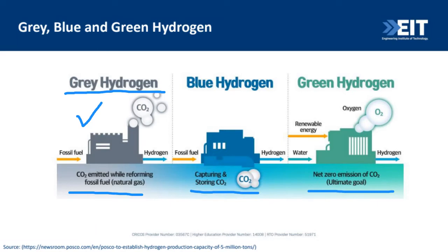Blue hydrogen uses the same production process as gray hydrogen — fossil fuels — but the difference is that we treat the carbon dioxide. We can store it underground in a depleted reservoir, or use it for the production of syngas and synthetic fuel. This is called carbon capture, utilization, and storage — CCUS. By treating the CO₂ in this way, we reduce greenhouse gas emissions into the atmosphere, and we call the resulting hydrogen blue hydrogen.